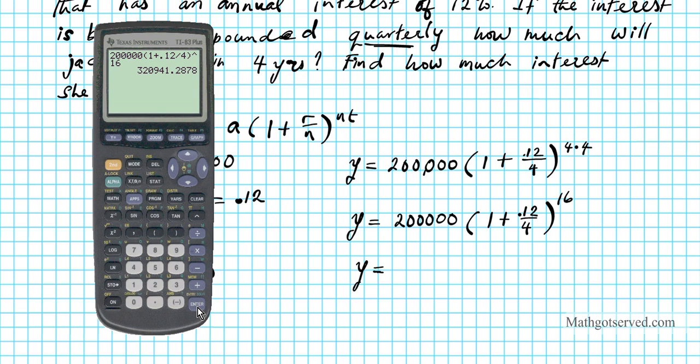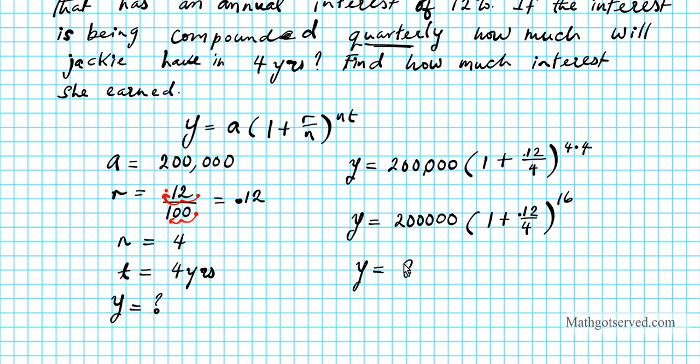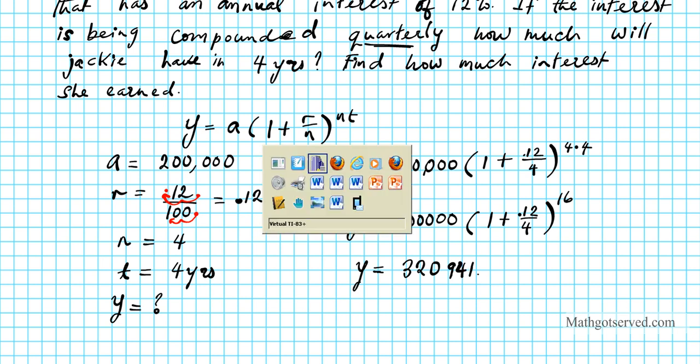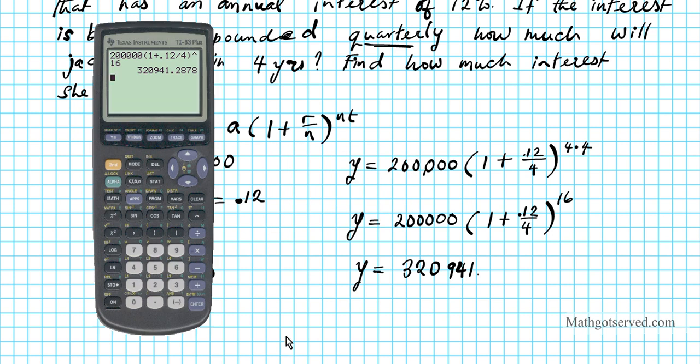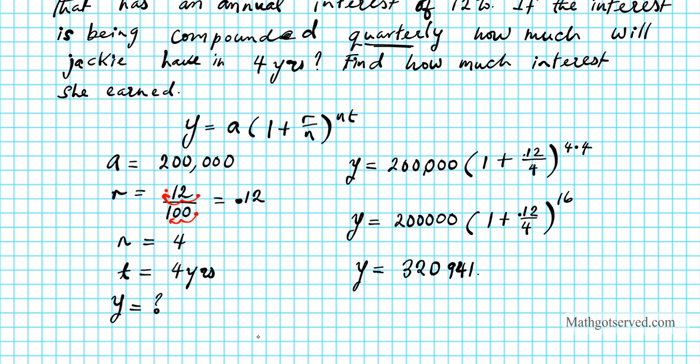The final amount is $320,941.29. Let's write that down: $320,941.29. So what does this answer mean? Let's write down what our answer means.